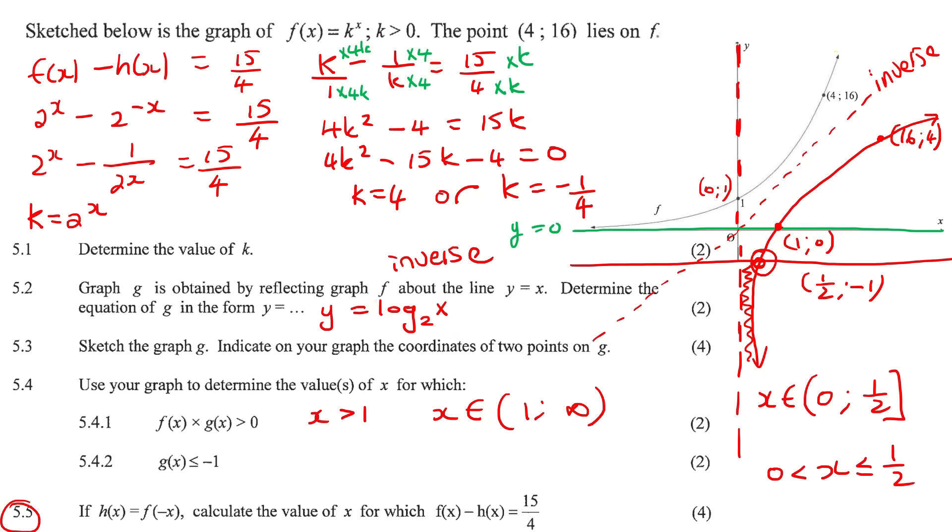So let's do the first one. So if k is 4, then we're going to end up with, we said k was 2 to the x. I should never erase that. So then we can say 2 to the x equals 4. 2 to the x is equal to 2 to the 2. And so therefore x is 2.